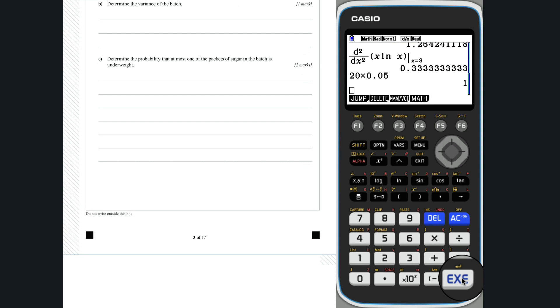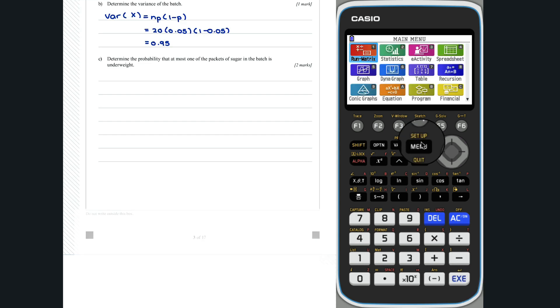Question 11b. The variance of a binomial distribution is given by n times p multiplied by 1 take p. By substituting in the values, we get that the variance of x is 0.95.